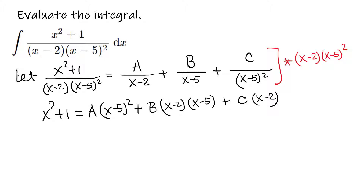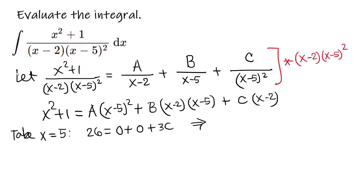This equation holds for any value of x, so we choose x-values to isolate constants. Choose x equals 5: then (x minus 5) becomes 0, eliminating the A and B terms. On the left, 5 squared plus 1 equals 26; on the right, 5 minus 2 equals 3, so 26 equals 3C, meaning C equals 26 over 3.